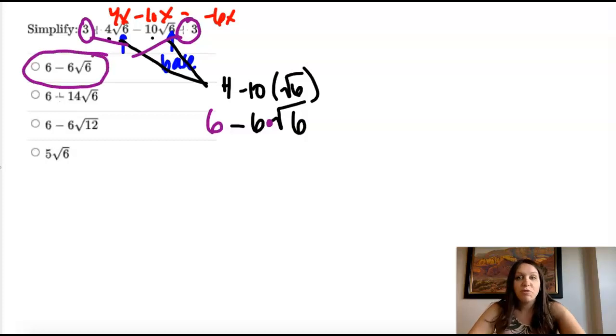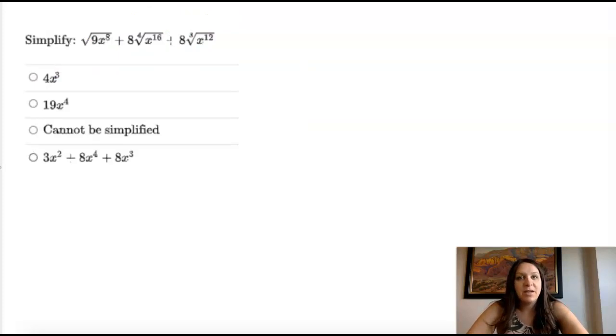So unfortunately they're not always that easy. Sometimes they're a little more tricky and we have to simplify a little bit more. So on these three we can see none of them have the same base. That's x to the eighth with a nine, x to the 16th, x to the 12th. So we have to simplify these a little bit.